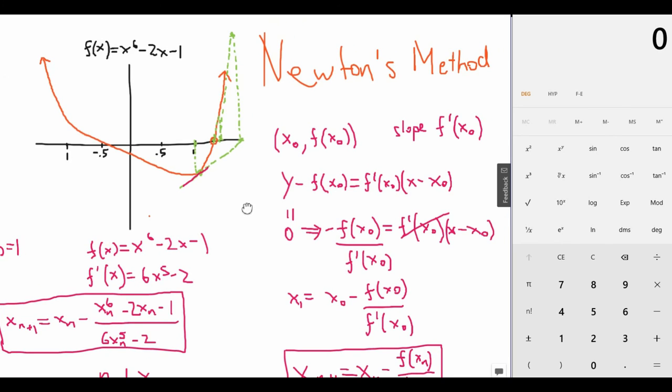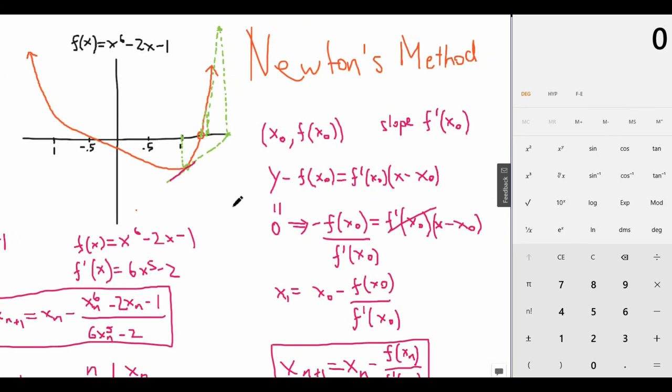But so basically, the overall idea of this method is finding tangents and getting increasingly close to that root by the tangents intersecting closer and closer to that root. And this is Newton's method. Hope you enjoyed, and see you in the next video.